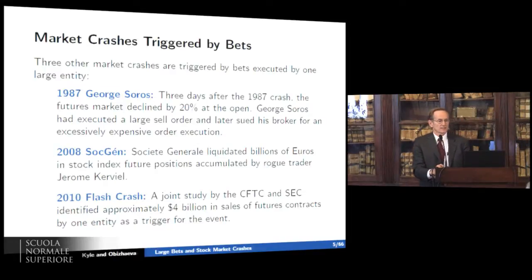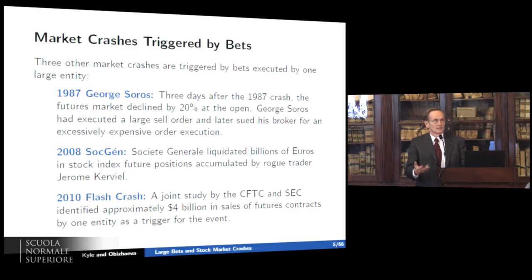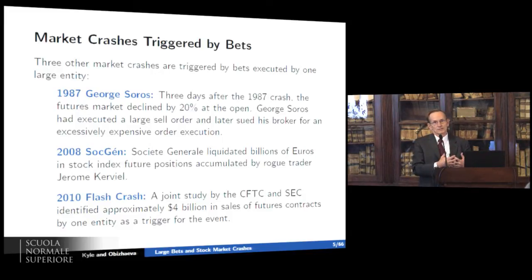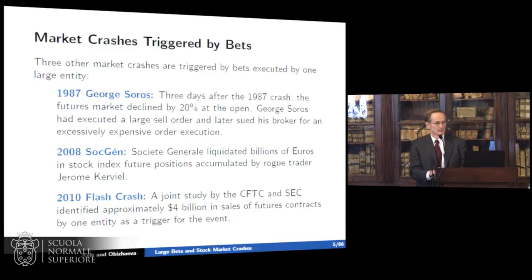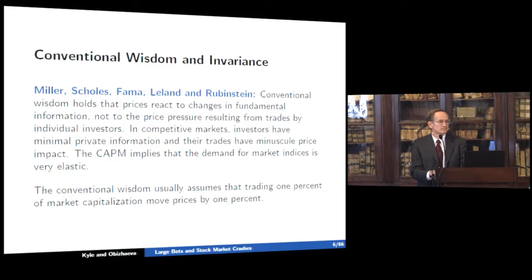Our fifth example is the flash crash of 2010, where a joint CFTC and SEC study identified approximately $4 billion in sales of futures contracts by one entity as a trigger. I was doing research at the CFTC on high-frequency trading when the crash occurred, and we were quickly able to identify who was buying and selling, results which went into the CFTC/SEC report pointing to that $4 billion sale as important.